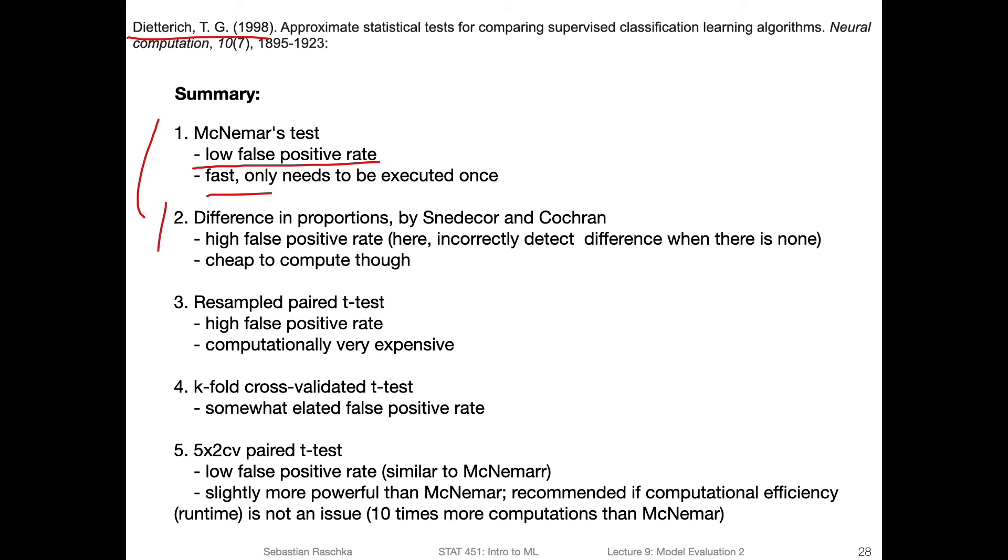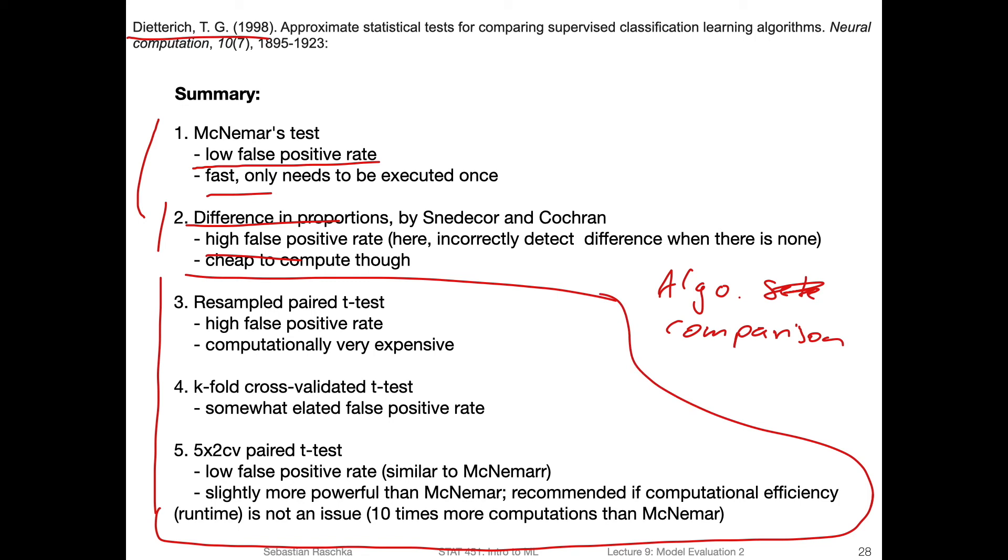There are other tests, for example, the difference in proportions test - it has unfortunately a high false positive rate. Tests that require fitting multiple models would be more the case for algorithm selection or comparison. These ones require fitting multiple models, but if they are more accurate, they're actually quite useful. Unfortunately, the resampled paired t-test has a high false positive rate. And similar to the repeated holdout method, it can be computationally expensive because we have to fit it to multiple training sets.